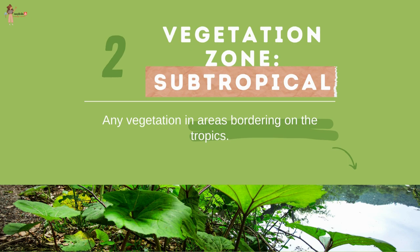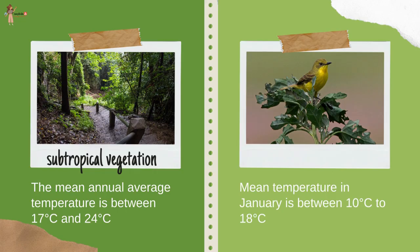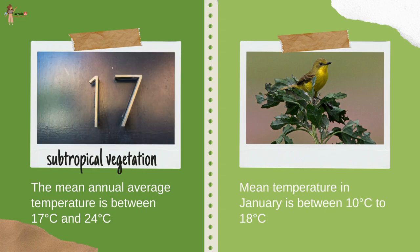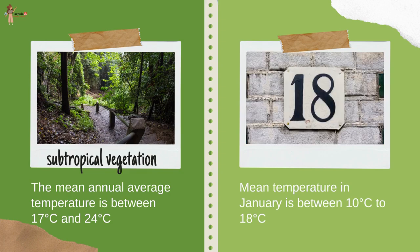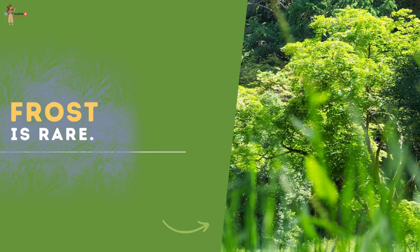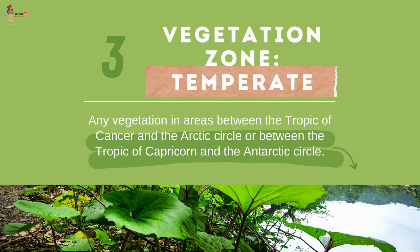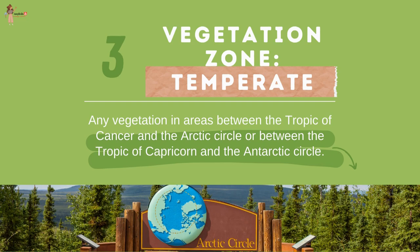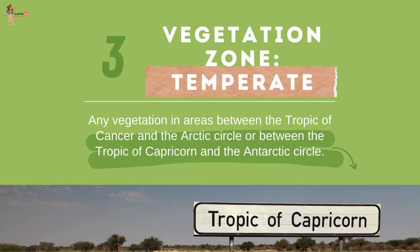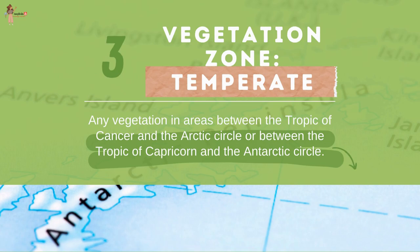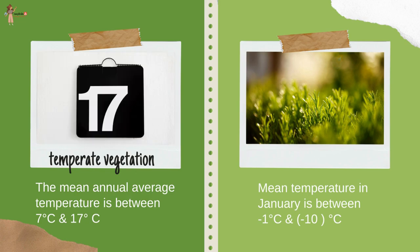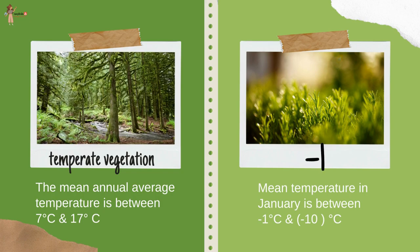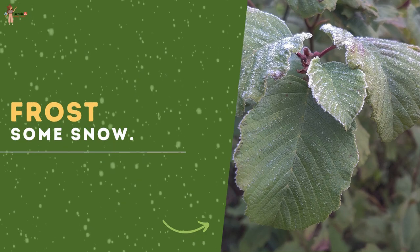Subtropical vegetation zone covers areas bordering on the tropics. The mean annual average temperature is between 17°C and 24°C, and the mean January temperature is between 10°C and 18°C — frost is rare. The temperate zone lies between the Tropic of Cancer and the Arctic Circle or the Tropic of Capricorn and the Antarctic Circle. Mean annual temperature is between 7°C and 17°C, and mean January temperature is between -1°C and -10°C — frost along with some snow is common.